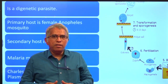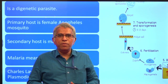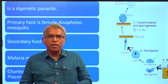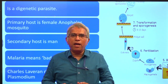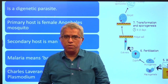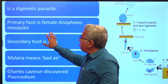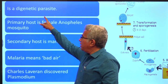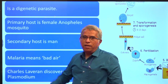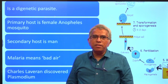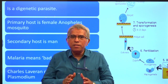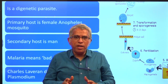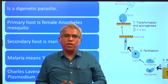Later, the oocysts of Plasmodium were discovered in the stomach wall of the female Anopheles mosquito. This Plasmodium, which is the causative agent of malaria, is a digenetic parasite. Digenetic parasite means it completes its life cycle in two hosts, namely primary host and the secondary host.